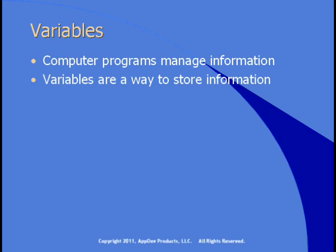One way to store information is in variables. Another way could be in a database, but we're talking about variables here. Variables are in memory, so they're not on the hard drive. You can copy the contents of a variable and write it to a file, and later read that file and put the information back into variables. But while your application is running, the variables exist only in memory.